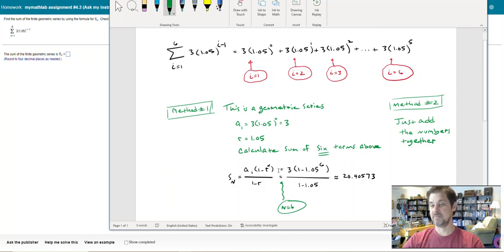There's another method that you could use. You could just add these numbers together. You know, get your calculator out, take 3 times 1.05 to the zero power plus 3 times 1.05 to the first power, go through and add all six of them together until you're done, and then you'll get this number.